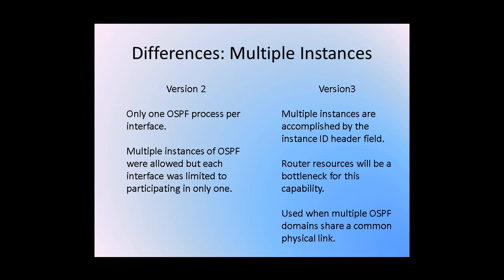Perhaps the most interesting difference between OSPF Version 2 and Version 3 is the addition of multiple instances per interface in OSPF Version 3. In OSPF Version 2, only one OSPF process per interface is allowed. Multiple instances of the OSPF process are allowed on a router, but each interface is limited to only participating in one. In OSPF Version 3, multiple instances are allowed per interface, accomplished by the use of the instance ID header field. Router resources will be a primary bottleneck for this capability. This process is usually only used when multiple OSPF domains share a common physical link, such as when an ISP may share a router with a customer and both may be running OSPF.